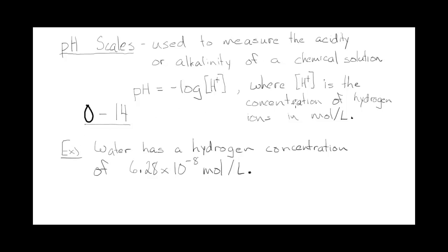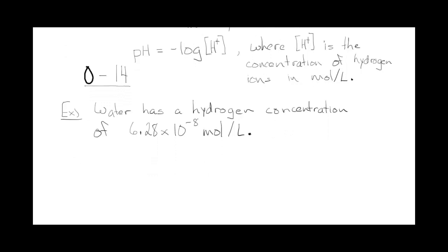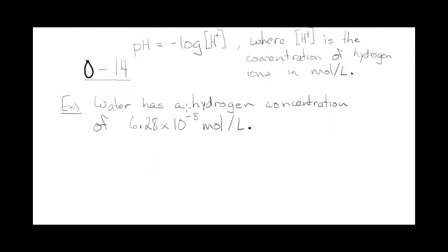Let's look at an example. We'll take the example of water. Water has a hydrogen concentration of 6.28 times 10 to the power of negative 8 moles per liter. This is a very small number—10 to the power of negative 8, that's like zero point and then eight zeros 6.28, extremely small number.